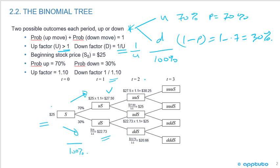Carrying along, if we go up-up, the stock price is 27.5 times 1.1, giving us $30.25. If we went up and then down, we'd have 27.50 divided by 1.1, which brings us back to our $25 beginning stock price.